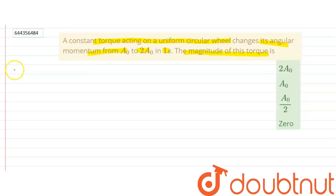So given data is initial angular momentum Li equals A0, final angular momentum Lf equals 2A0, time taken is one second.